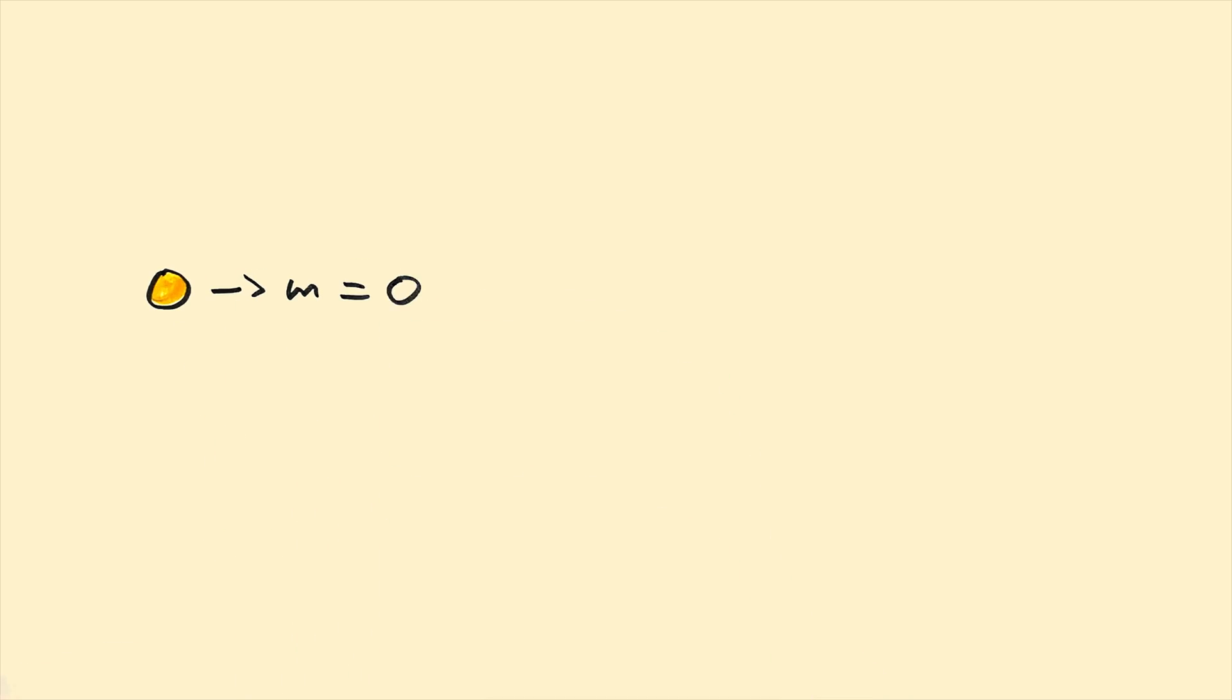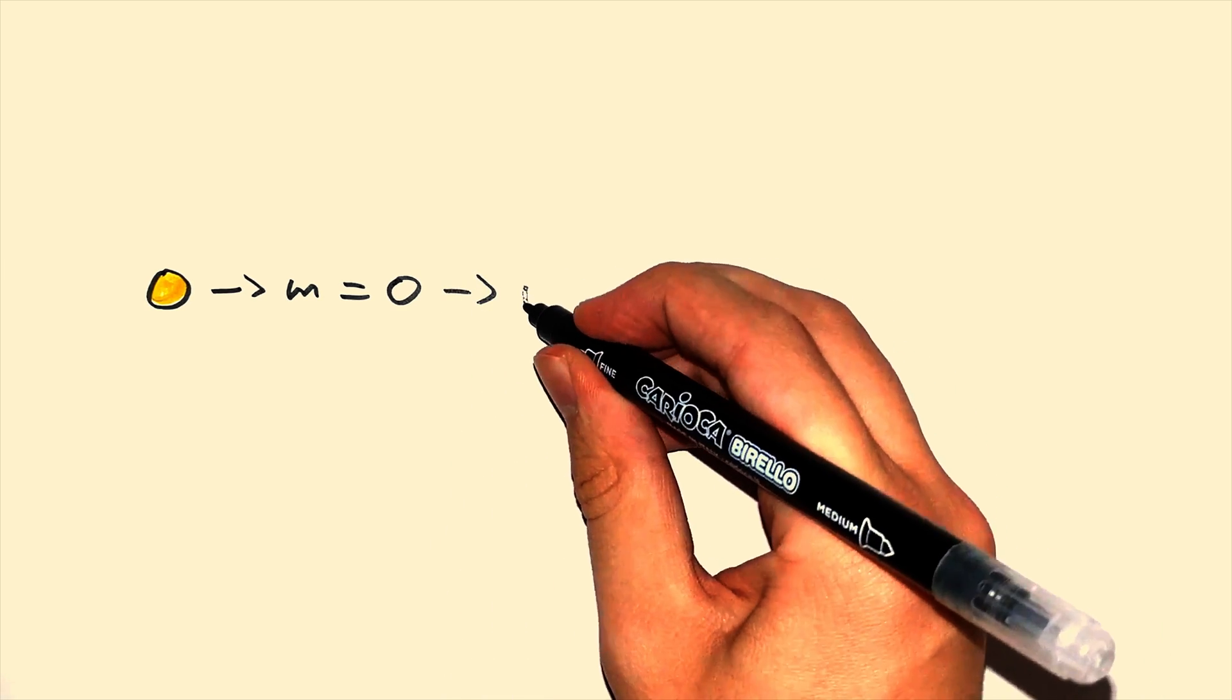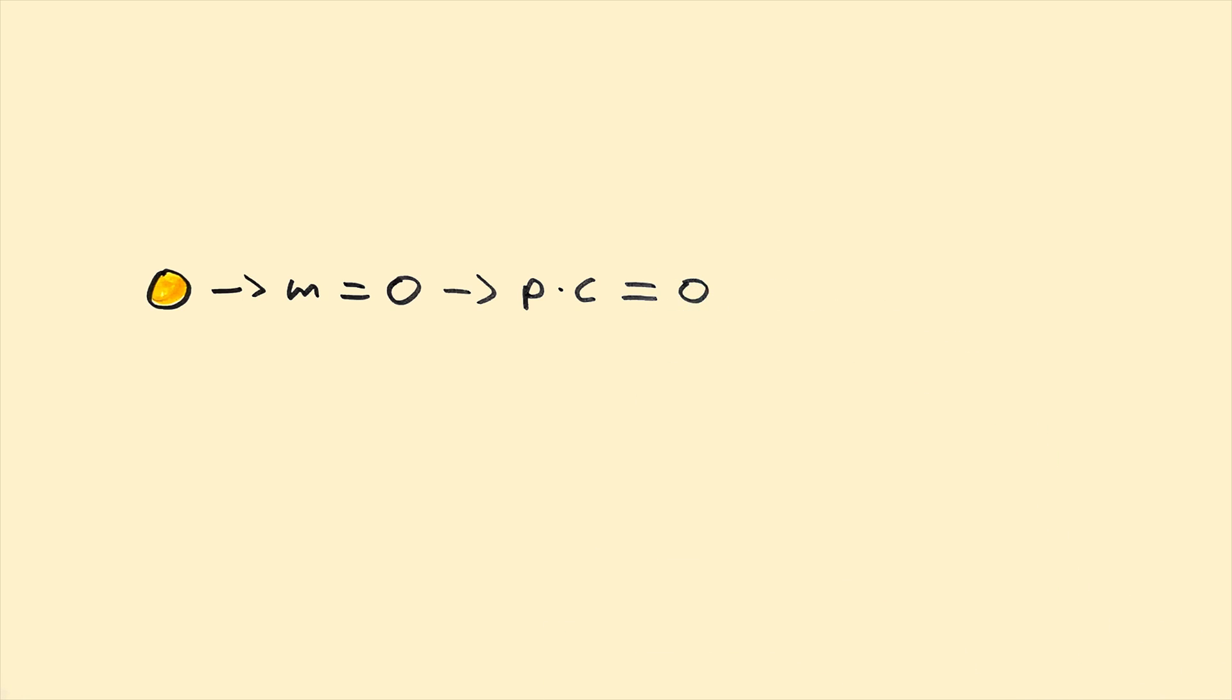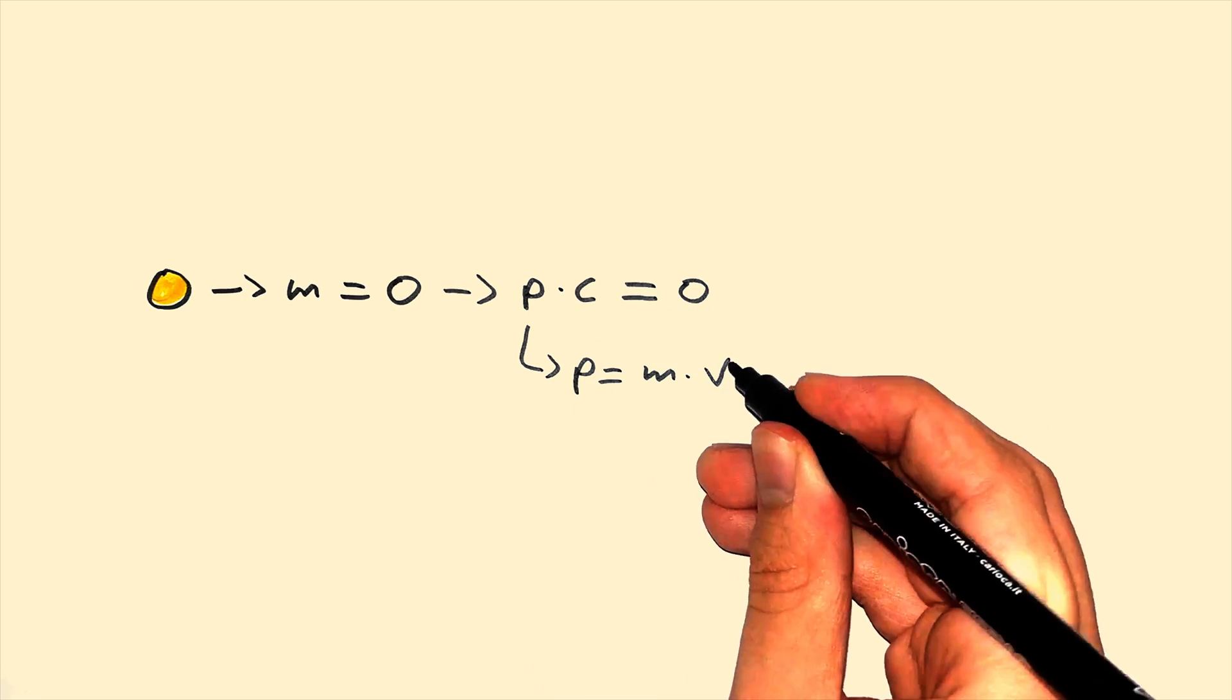But wait! Since photons are massless, how can the product of momentum times the speed of light not be always 0, since by definition momentum is mass times velocity?